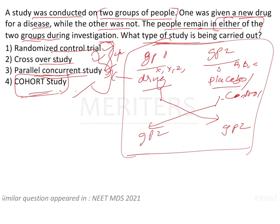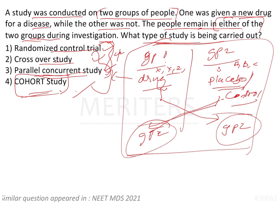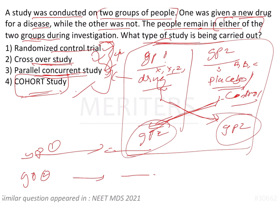Coming back to the question: group 1 (XYZ) was given the drug and group 2 (ABC) received placebo, then they switched. This crossover is called a crossover study. In contrast, a parallel concurrent study means group 1 stays on the same regimen and group 2 stays on their regimen until the end — no switching. Cohort is an observational study, so the answer is crossover study.